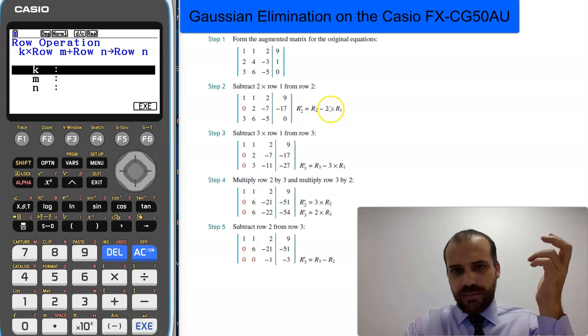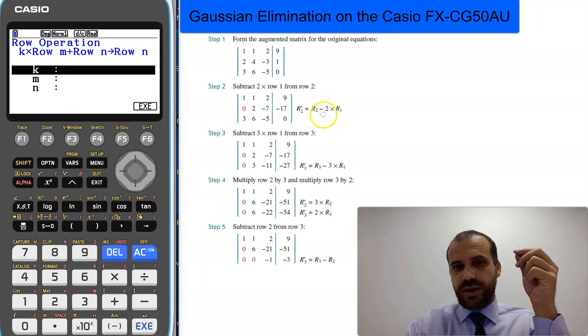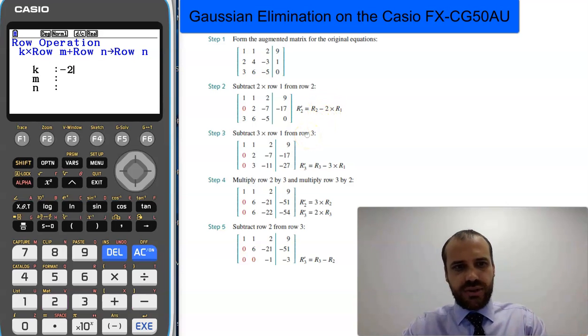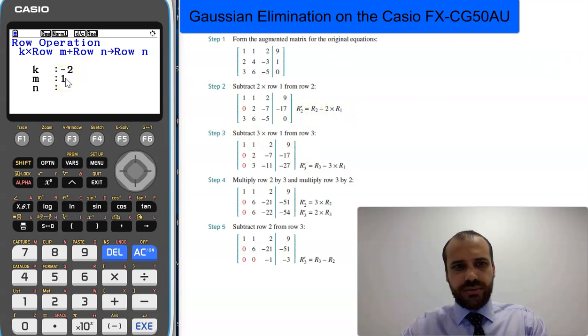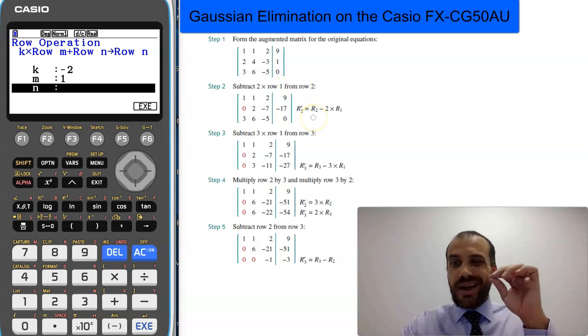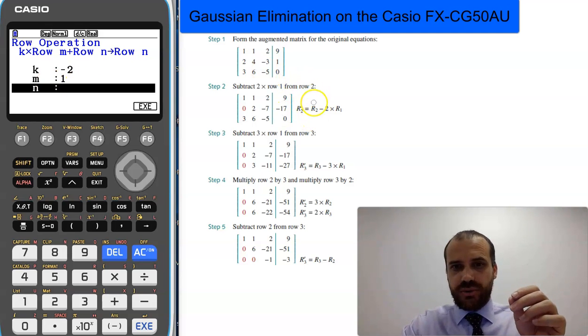You can see we want to multiply row 1 by negative 2. If you want to subtract a row from another, you're going to have to do negative 2. So negative 2, and row 1 is what we're multiplying it by. We're adding that to row 2.